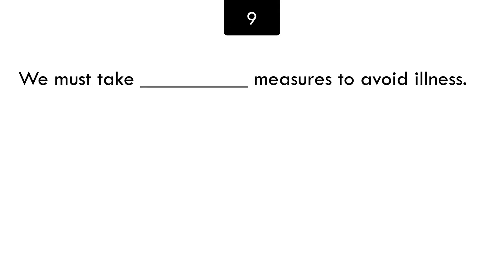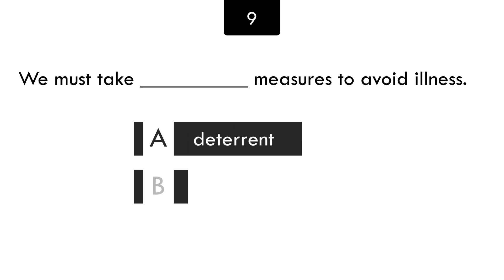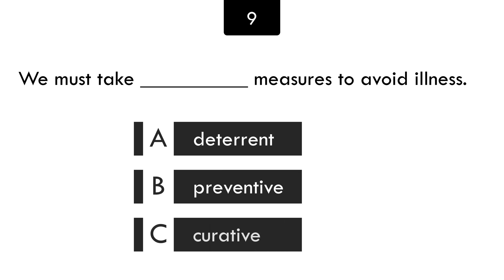We must take preventive measures to avoid illness. The options are deterrent, preventive, and curative. Preventive measures are intended to stop something before it happens.